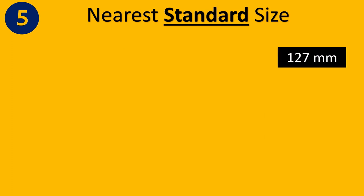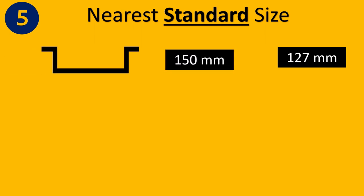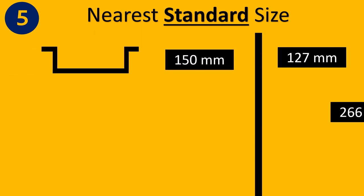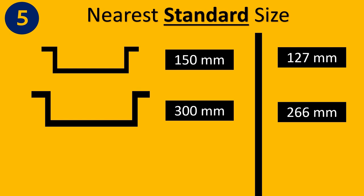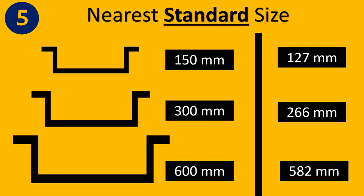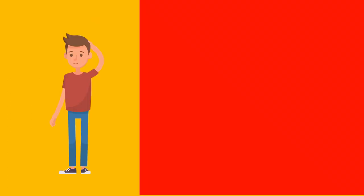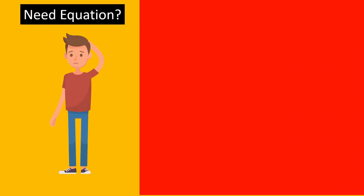Step five is knowing the nearest standard size. Once you have your final calculation from steps one through four, you round up to the nearest standard size. For example, if your calculation gives 127 mm, you go for 150 mm; if it gives 266 mm, you go for 300 mm or 600 mm — whatever is the nearest standard size.